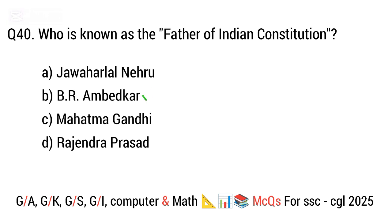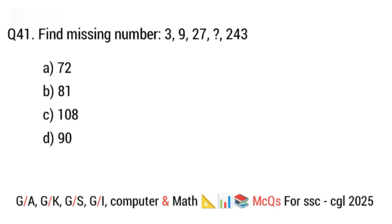Question 41. Find the missing number in the series: 3, 9, 27, 243. The right answer is option B. 81.